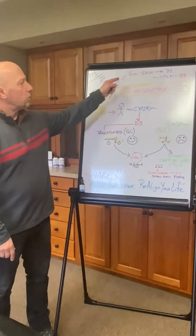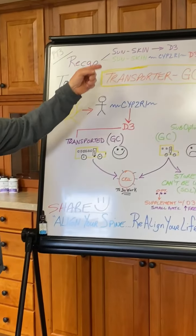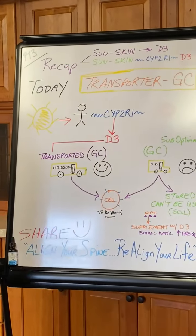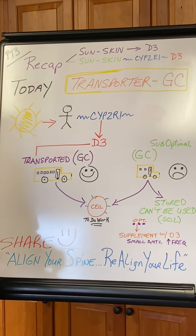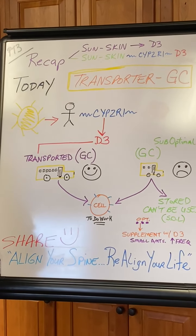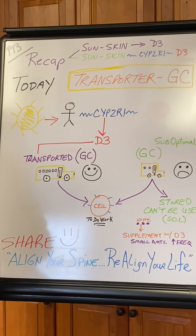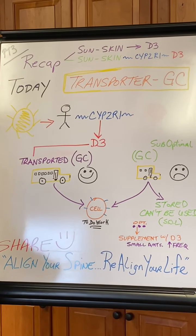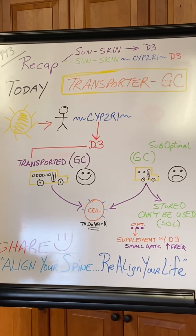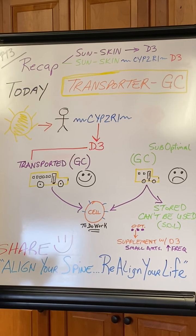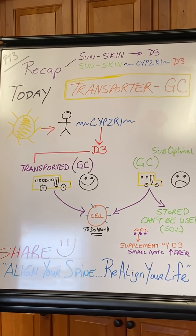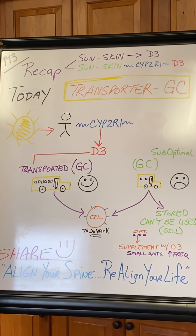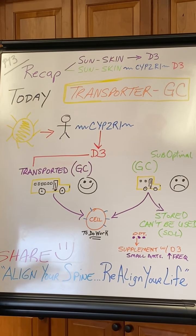In part one, we talked about how the sun's rays hit your skin and the cholesterol inside your skin, and causes your body to start the production of vitamin D3, which is actually a hormone.